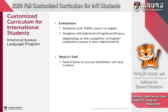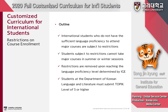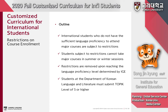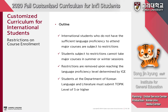The Institute for General Education places restrictions on major course enrollment for international students who do not have sufficient language proficiency to attend major courses. Students subject to restrictions cannot take major courses in summer or winter sessions. All restrictions are removed upon reaching the language proficiency level determined by the Institute. The Department of Korean Language and Literature has its own rules for restrictions on course enrollment.